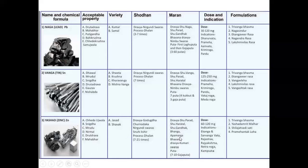The dose of Yashada Bhasma is 60 to 120 mg. Indications include Ekang and Sarvanga Vata — neurological and musculoskeletal problems such as Alzheimer's, Parkinsonism, arthritis, and rheumatism; Hemiplegia; Rajashtrava — menstrual bleeding disorders in women; Rajyakshma — Tuberculosis; Netraroga — ophthalmic and eye problems; and Kampavata — tremors and Parkinsonism. The formulations from Yashada include Trivanga Bhasma, Yashadamurta, Malhar, Shilajatwajivati, and Pramehantaka Loha.